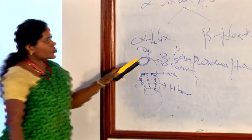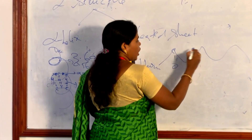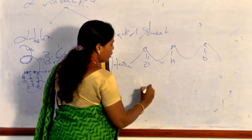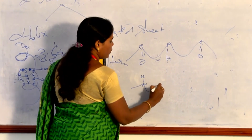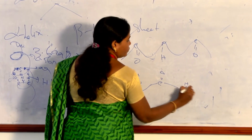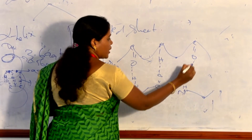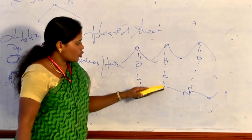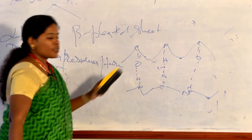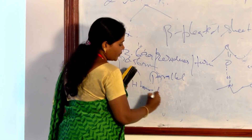Moving on to the beta pleated sheet — this sheet contains alternating carboxylic and amino groups. There is hydrogen bonding here as well: the oxygen of the carboxyl group binds with the hydrogen of the amino group. There are two arrangements: parallel and anti-parallel.